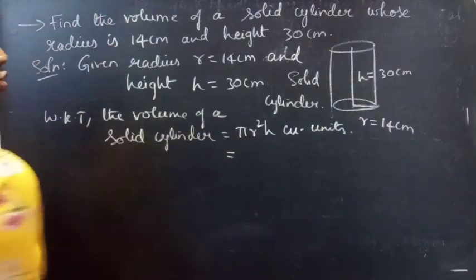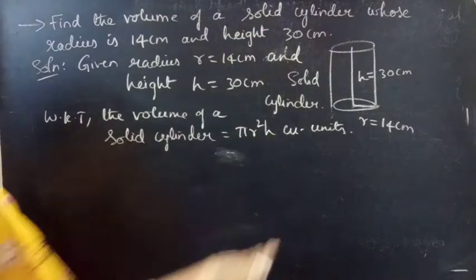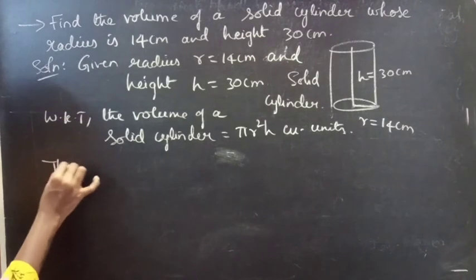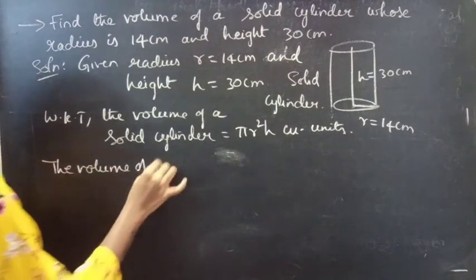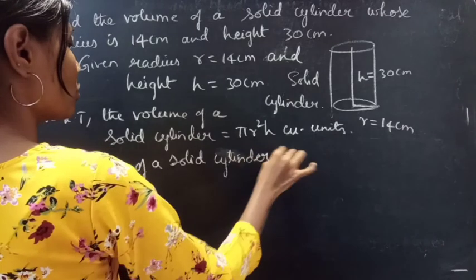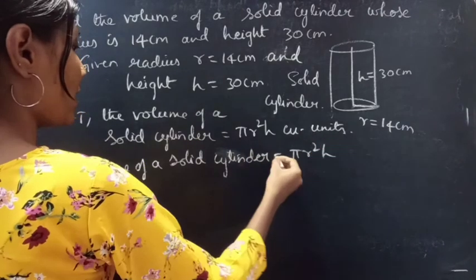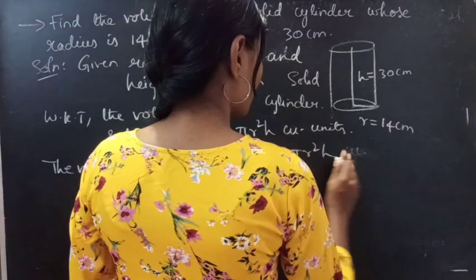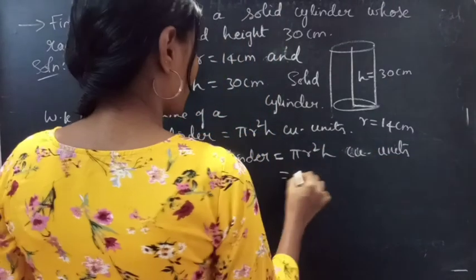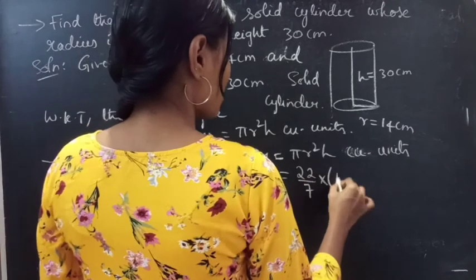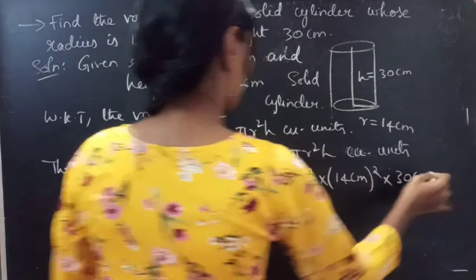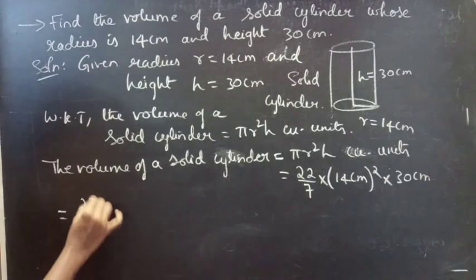Since we are having radius and height values, we can easily find the volume of the solid cylinder. The volume of a solid cylinder equals π r² h cubic units. Taking π equals 22/7, radius 14 cm, and height 30 cm, this equals 22/7 × 14 × 14 × 30.